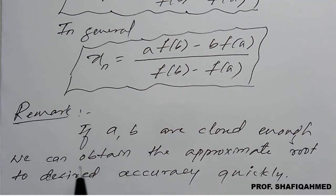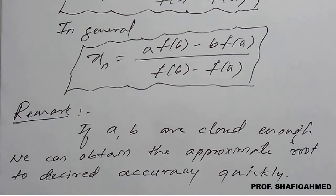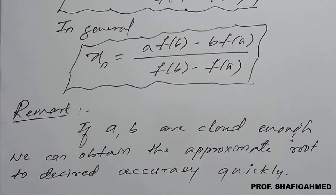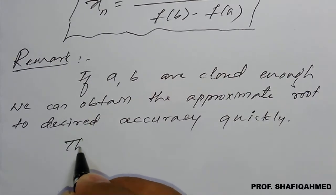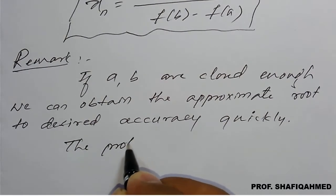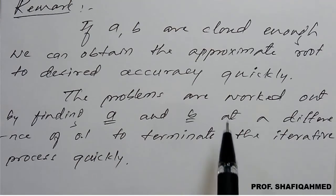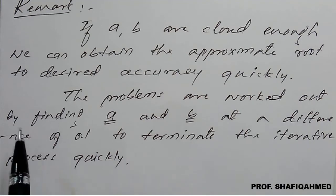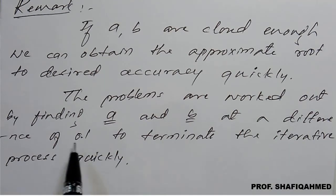So with the help of that still we can go again closer so that we can get a result in less number of iteration and more accurate. So also the problem are work out by finding a and b at a difference of 0.1.